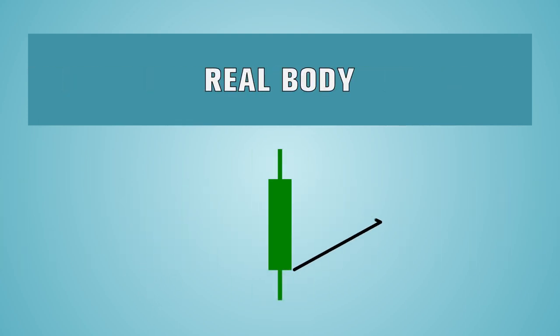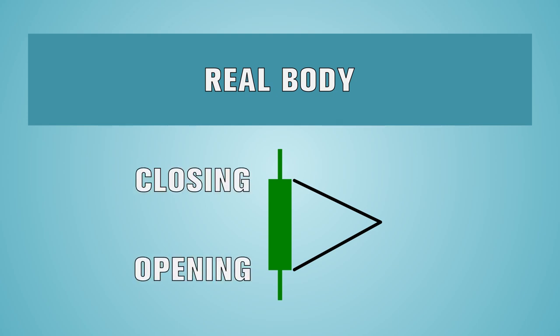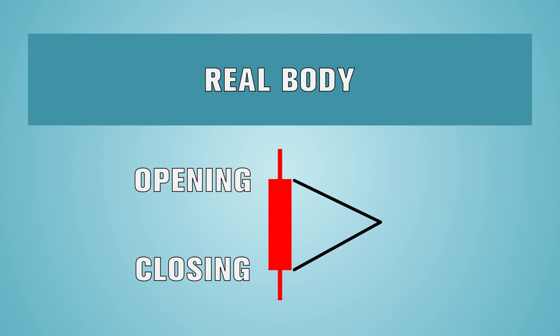The larger intersection of the candle is known as the real body. It shows the opening and closing prices. For the bullish candle, the bottom of the candle body shows the opening price, and the top shows the closing price. For the bearish candle, the top shows the opening price, while the bottom shows the closing price.